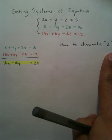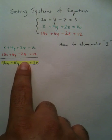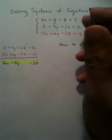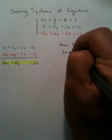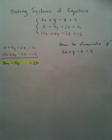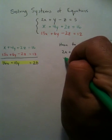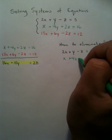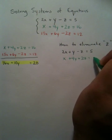And the reason for that is because I eliminated z here. So, I'm going to take the black function, 2x plus y minus z equals 5. And then I'm going to take the green function, x plus 4y plus 2z equals 16.